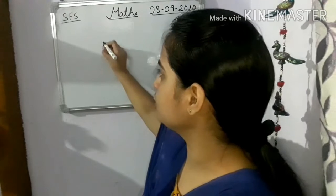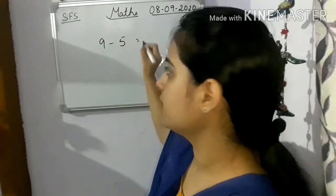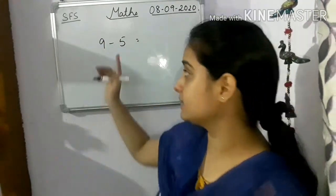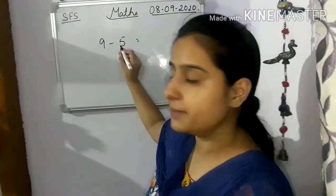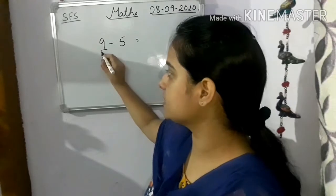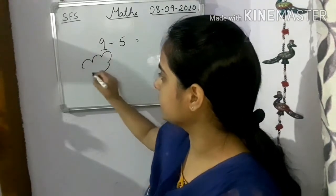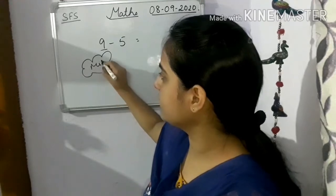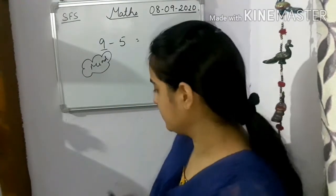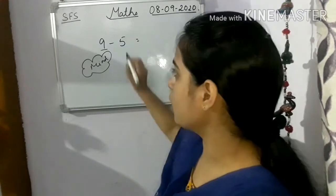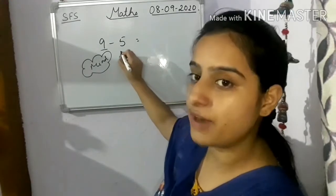So what if the question is 9 minus 5? How will we subtract this mentally children? We will keep the bigger number in mind. Which is the bigger number? 9 is the bigger number, isn't it? So the bigger number we will keep in mind, and the smaller number children will open — how many fingers? 5 fingers.